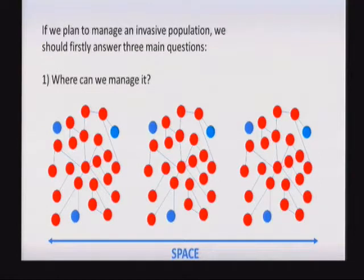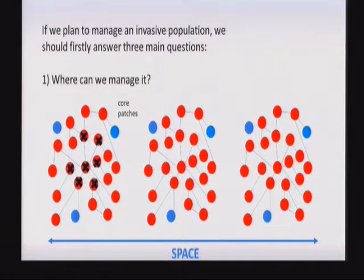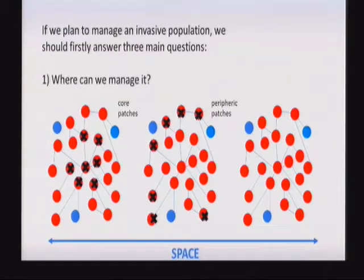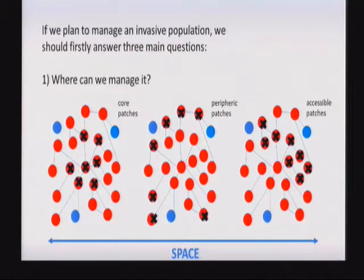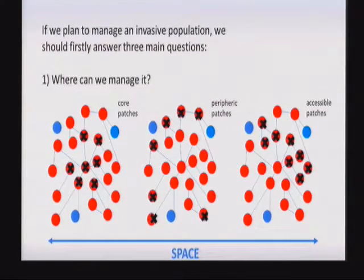The second question is: where can we manage this invasive population? Let's say we have some invaded patches. Can we control, eradicate, or remove individuals from core patches? This could be very useful if we want to reduce the density and impact of the species, but maybe this way we cannot control the invasion. Can we control peripheral patches? At the periphery, we can remove some individuals and limit the spread. Or maybe there are access restrictions, so we can only start with some specific accessible points in space.